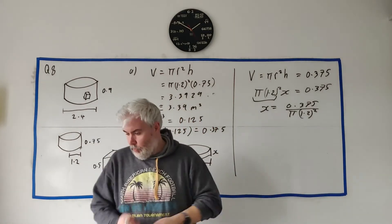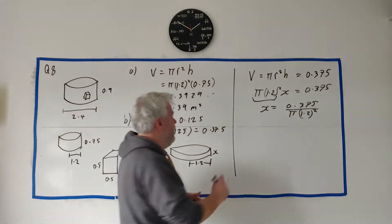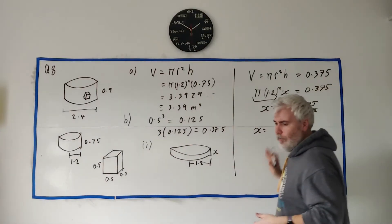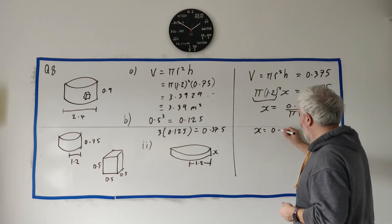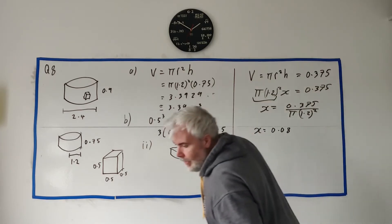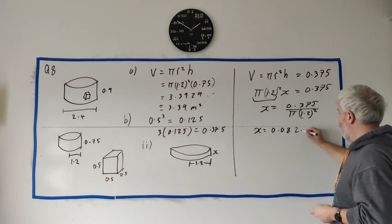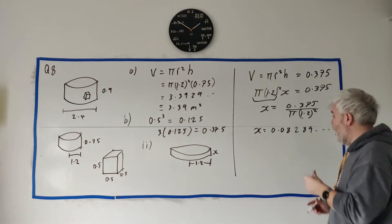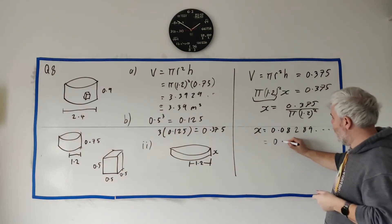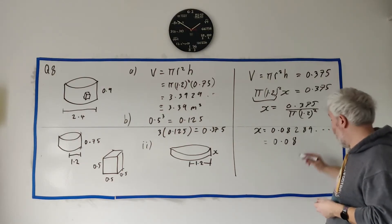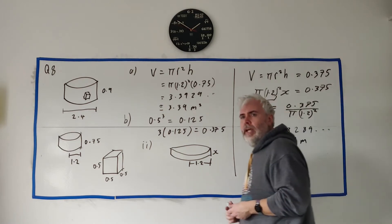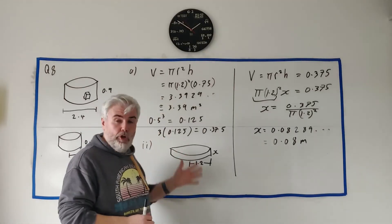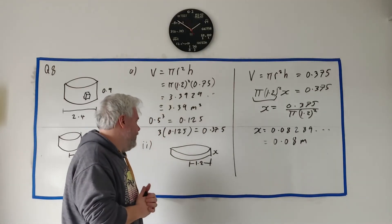So x equals 0.375 divided by (pi times 1.2 squared). Put that into the calculator and we get x equals 0.08289... Rounded to two decimal places, that's 0.08 meters. That's how much the water rose — it's a tricky question but it comes up a lot in the exam so it's a good one to keep an eye out for.